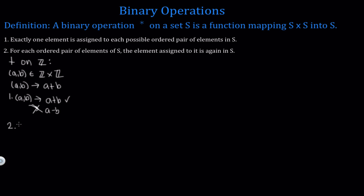Condition two says that (a, b), where a and b are both integers, gets mapped to a plus b, and a plus b must also be an integer. So if there are any integers a and b where a plus b is not an integer, we can't have this as a binary operation. But we do have that if a is a whole number and b is a whole number, then a plus b is always a whole number — so a plus b is always an integer. This satisfies condition two, and tells us that addition is in fact a binary operation on the set of integers.